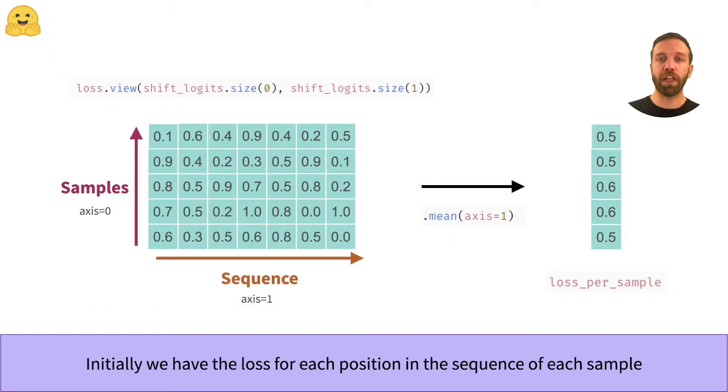During the calculation of the standard loss, the logits and labels are flattened over the batch. With the view, we unflatten the tensor to get the matrix with a row for each sample in the batch and a column for each position in the sequence of the sample. We don't need the loss per position, so we average the loss over all positions for each sample.